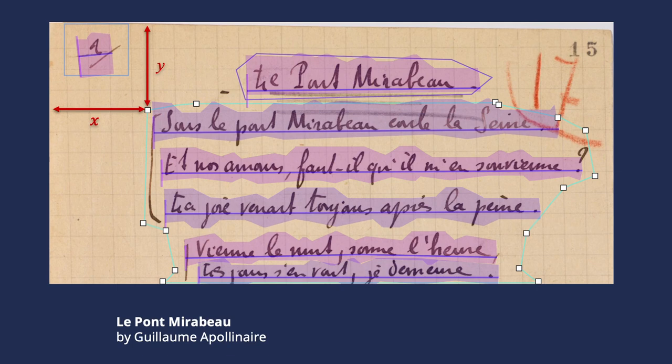Layout analysis is a computer vision task wherein we generate a series of x and y coordinates corresponding to regions or lines drawn on the image. Sometimes they are associated with a specific label demonstrating a distinction between different types of regions or lines.